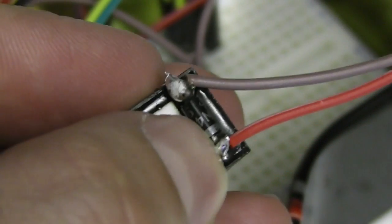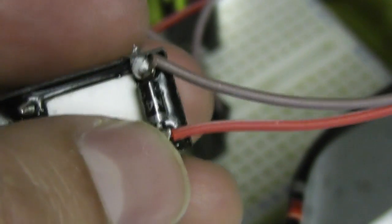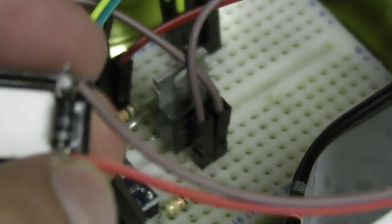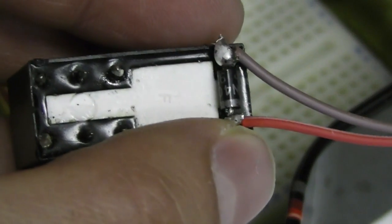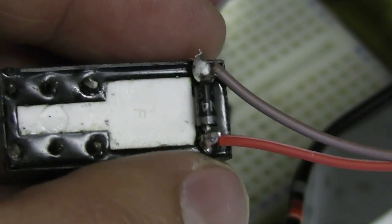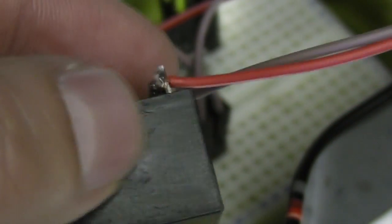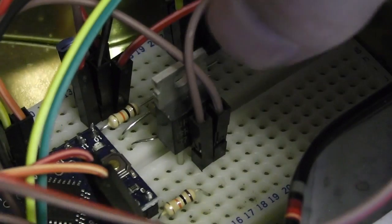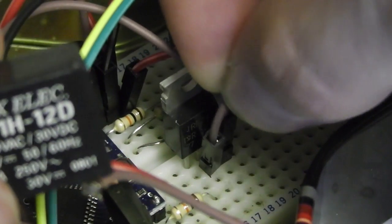I've just soldered those joints. You can see that the negative side of the diode is pointing towards the positive - well, what I decided should be the positive contact on the relay. That's because the back EMF is always in the opposite polarity to the voltage the coil's being driven with.